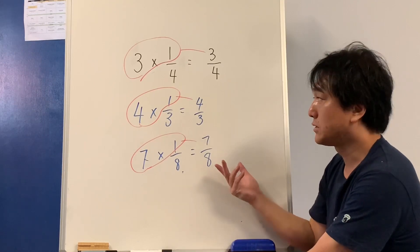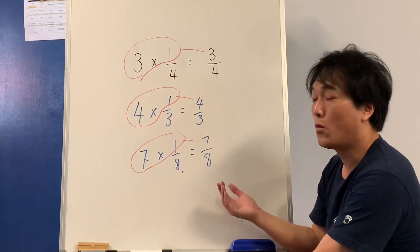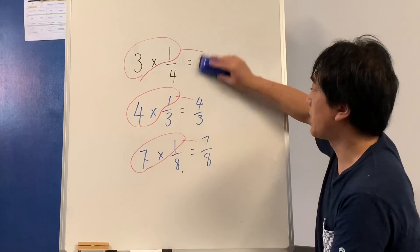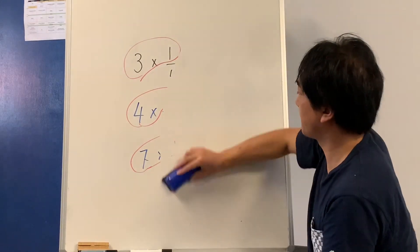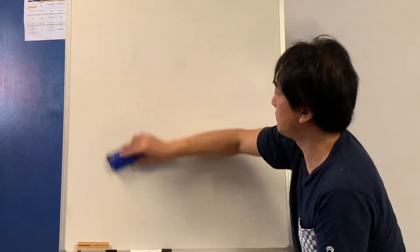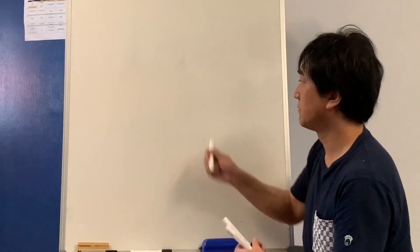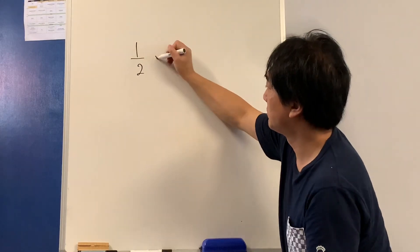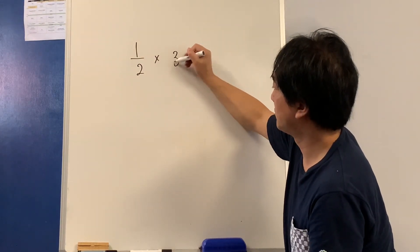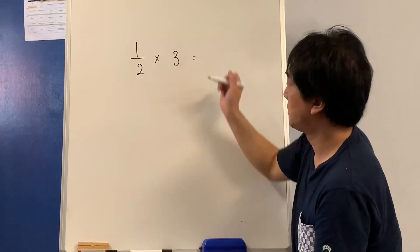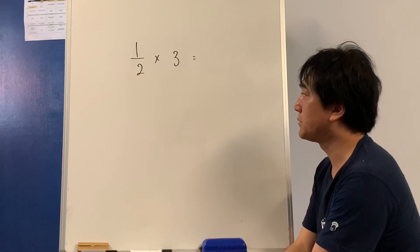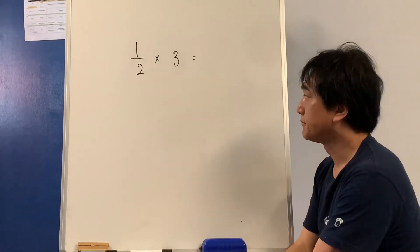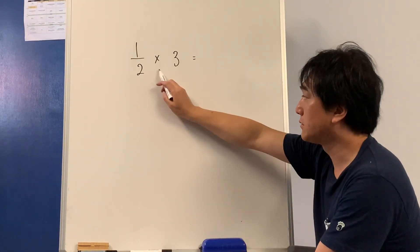It seems like we can do a multiplication. What about the other way around? Can I do half times 3? It doesn't make sense at first, does it?